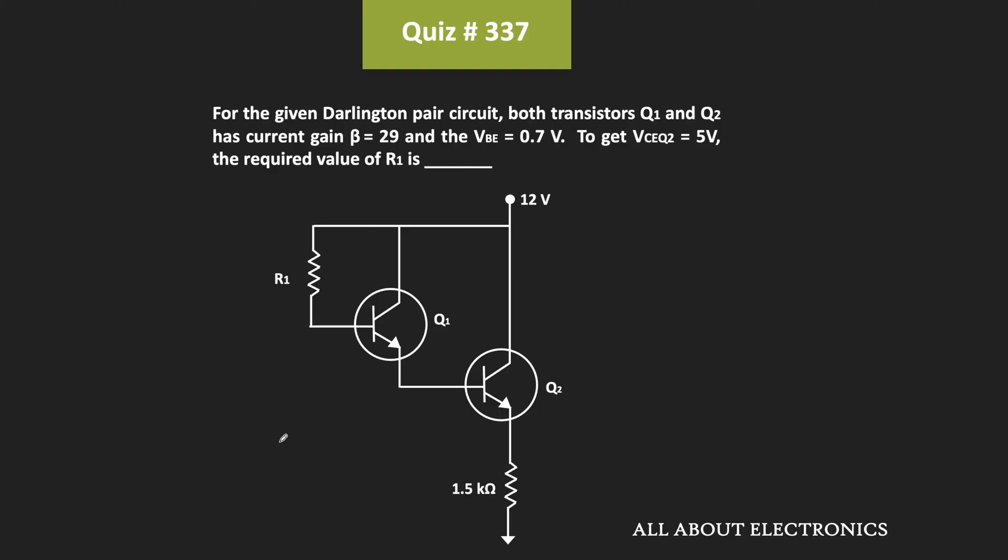Hey friends, welcome to the YouTube channel All About Electronics. In this question, we have been given a Darlington pair circuit where for both transistors the current gain β is equal to 29.